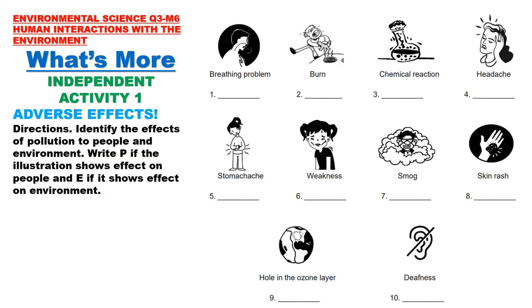Let us now answer the different activities in What's More. Independent Activity 1: Adverse Effects. Directions: Identify the effects of pollution on people and environment. Write P if the illustration shows an effect on people, and E if it shows an effect on the environment. The items are: 1. Breathing problem, 2. Burn, 3. Chemical reaction, 4. Headache, 5. Stomach ache, 6. Weakness, 7. Smog, 8. Skin rash, 9. Hole in the ozone layer, and 10. Deafness.